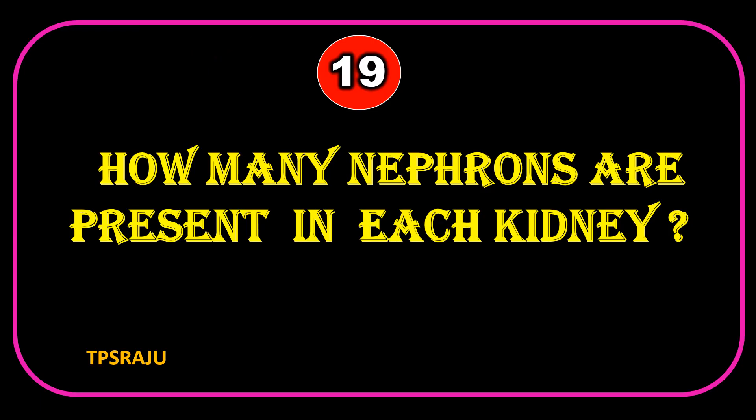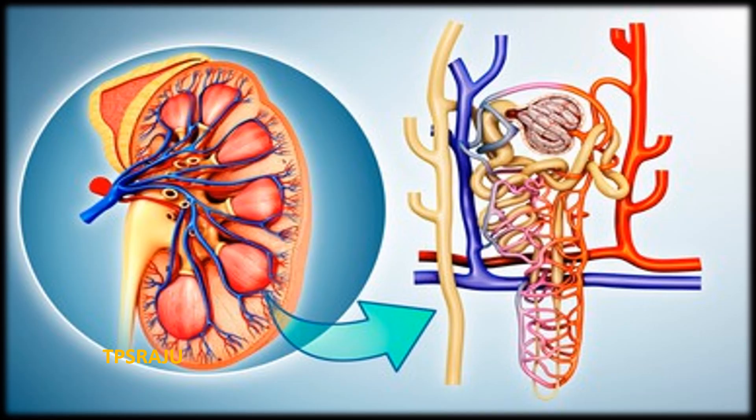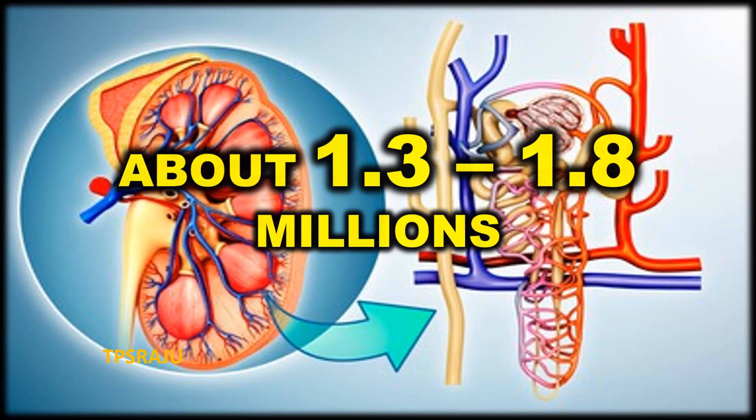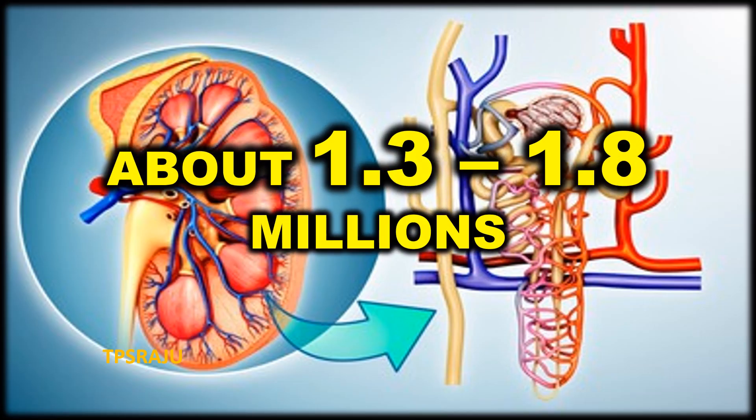How many nephrons are present in each kidney? About 1.3 to 1.8 million.